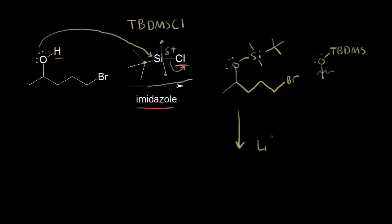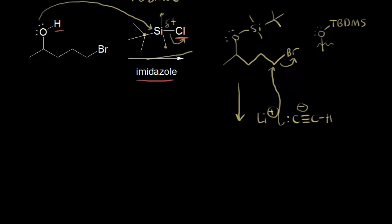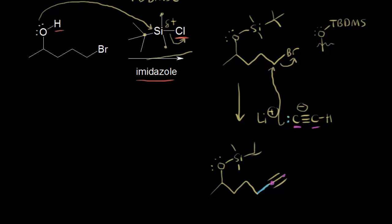We had a carbanion here which can now function as a nucleophile. This lone pair of electrons can attack this carbon, and these electrons kick off onto the bromine. We would add on our triple bond. This carbon adds onto here, forming this new bond. We still have our protecting group: the oxygen bonded to the silicon, with the methyl groups and tert-butyl group.